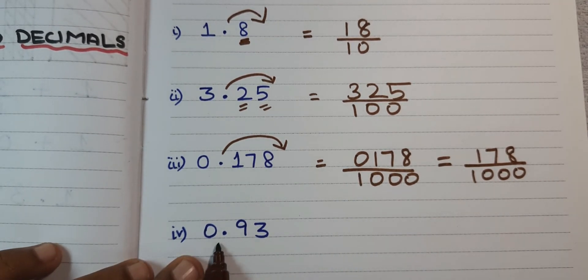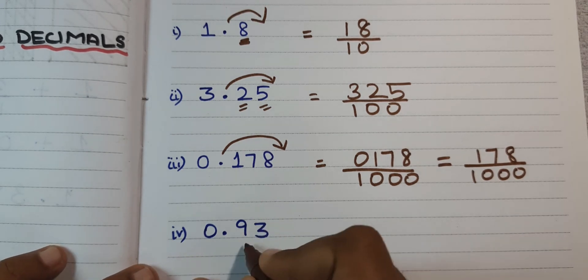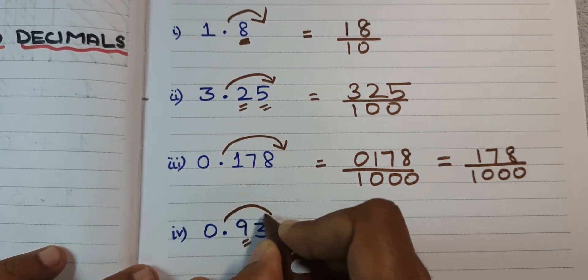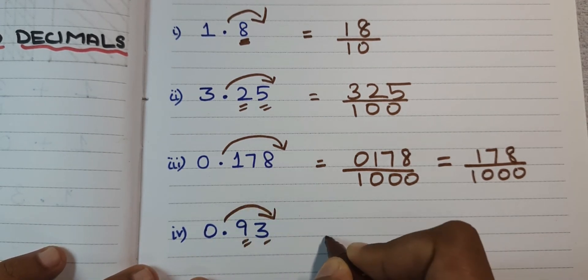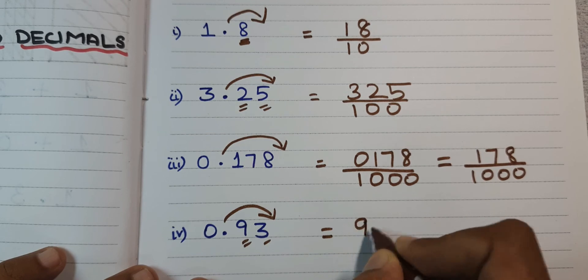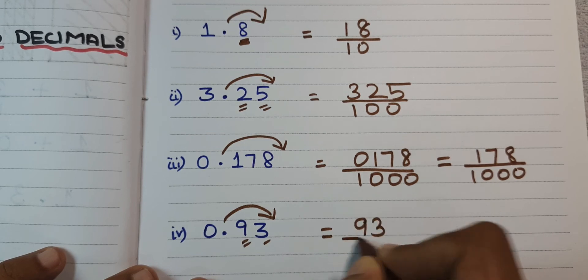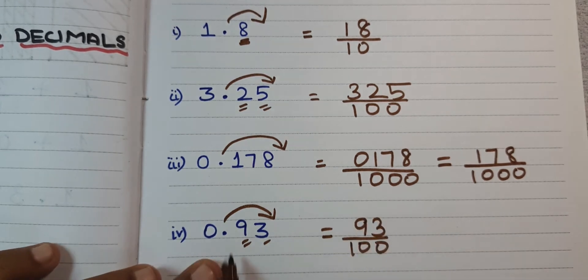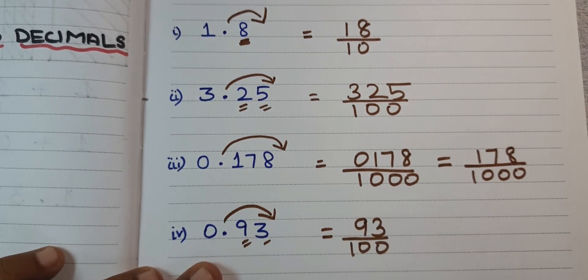Next: 0.93 — how many digits? Two digits. So you can write it as 93 divided by 100. Two digits means two zeros.